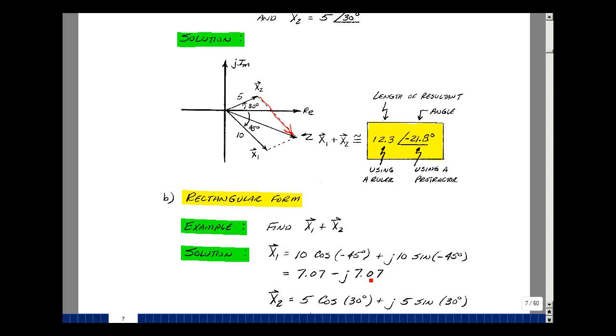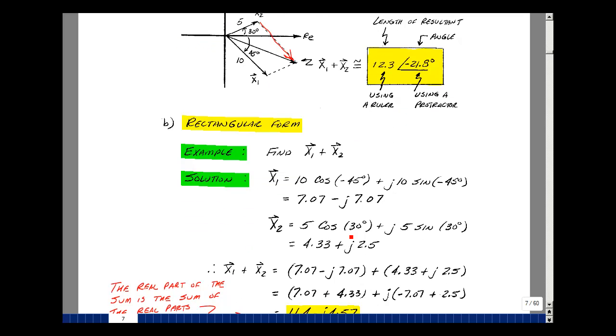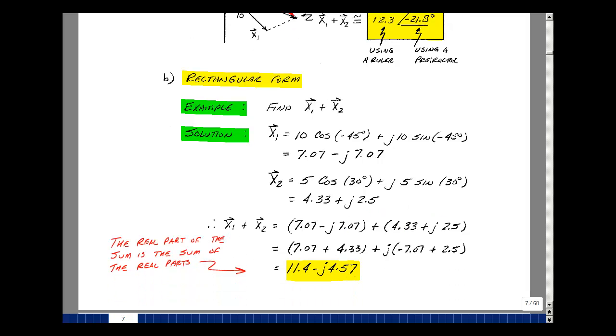The sine, however, is an odd function, and so the sine of minus 45 is actually negative, and it's also equal to 0.707, so multiplying that by 10. Then X2 was 5 at angle 30, so 5 times the cosine of 30, plus J5 sine of 30. The cosine of 30 is the square root of 3 over 2, and multiplying that by 5 you get 4.33, and then the sine of 30 is actually equal to a half, and you get 2.5. So I'm going to add these two results. We're going to add the real to the real, and the imaginary to the imaginary. So I'm going to group those together, and I get 11.4 roughly, and then these added together, I get roughly a minus 4.57.